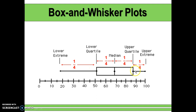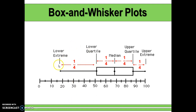For example, this whisker over here is short in comparison to the other whisker. The same amount of data points lie within each range, so the difference is that this fourth of the data down here is more spread out than this fourth of the data.